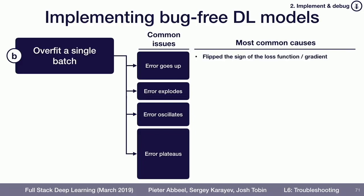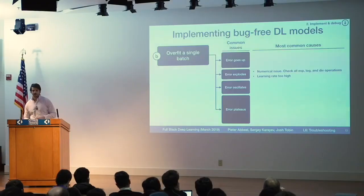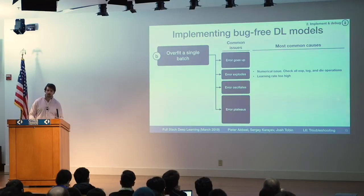If error goes up, most commonly this is probably due to a flipped sign somewhere — like maybe you're minimizing the log probability instead of the negative log probability. If the error explodes, this is most often caused by a numerical issue, like you're taking an exponent somewhere, or taking a log of a negative number.